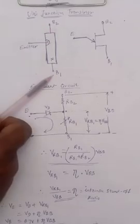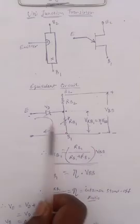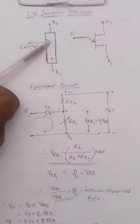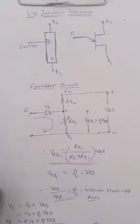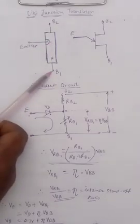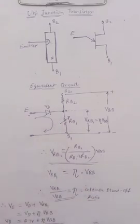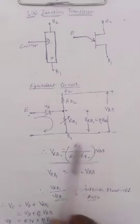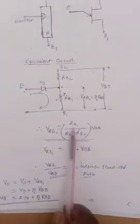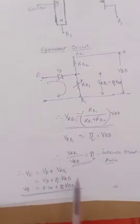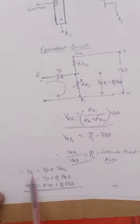This is base two and base one — just like a p-n junction. That's why in the equivalent circuit diagram we use the symbol of the diode. RB2 is the resistance between the point where the emitter junction is formed up to terminal B2. RB1 is the resistance between the emitter junction point and base one, indicated as a variable resistor. The voltage across RB1 is VRB1, given by the formula: RB1 divided by (RB1 + RB2) times VBB. This ratio is known as eta (η), where η = VRB1 / VBB.